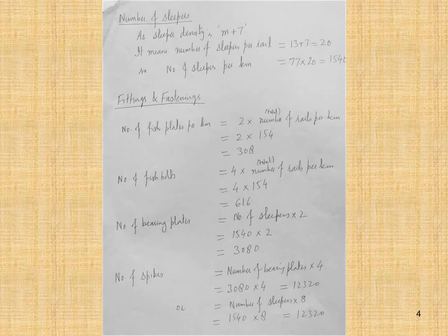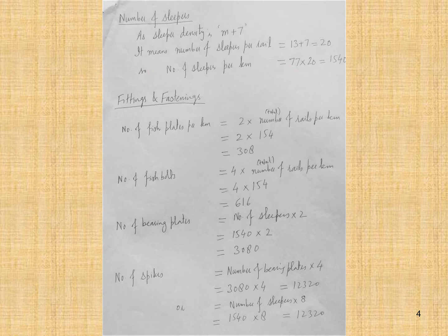The number of sleepers required: since sleeper density is M+7, the number of sleepers per rail is 13+7 = 20. The number of sleepers per kilometer is 77 × 20 = 1540. For fittings and fastenings, the number of fish plates per kilometer equals 2 × total number of rails per kilometer = 2 × 154 = 308.